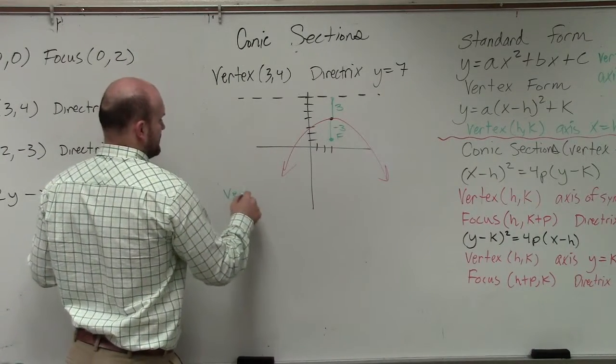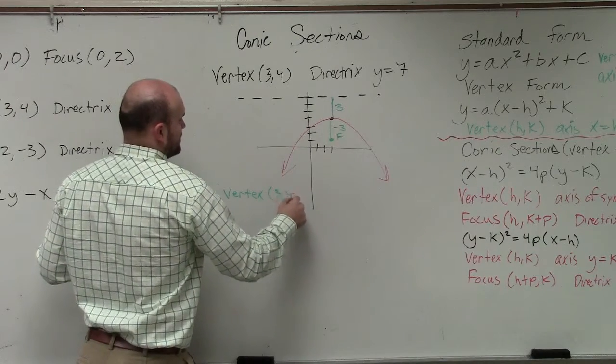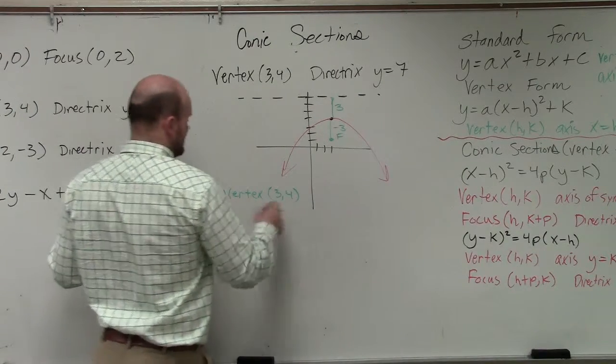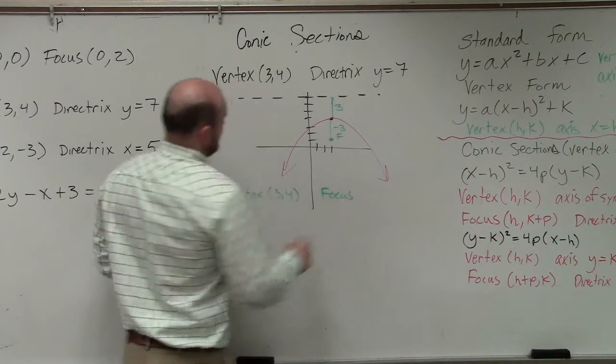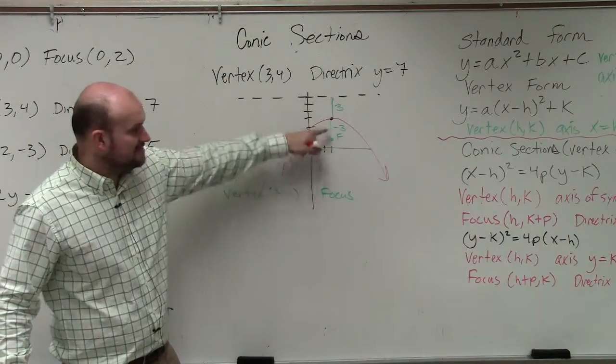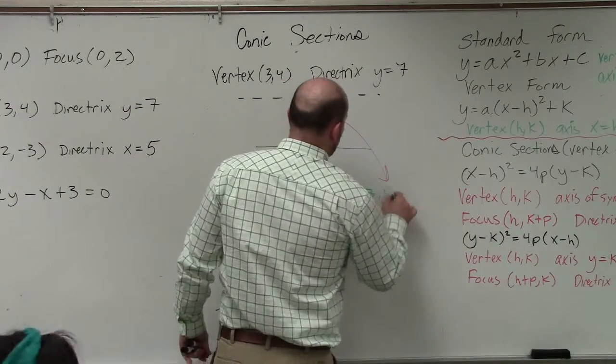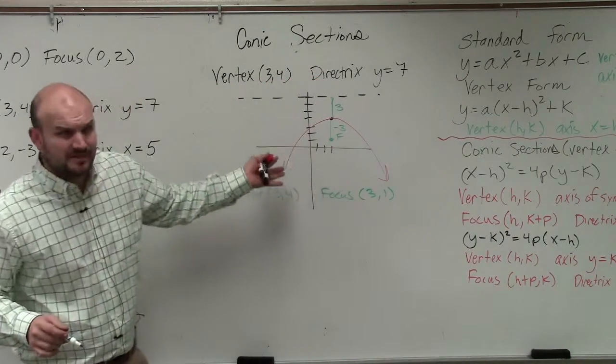So let's see. We have vertex, in this case, is 3, 4. To find my focus, my focus is basically my vertex minus 3. So that's going to be 3, 1. Or you could also see from this graph, it's pretty simple, right?